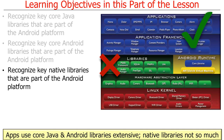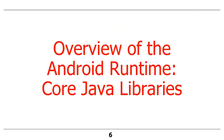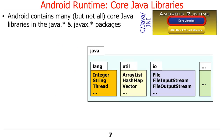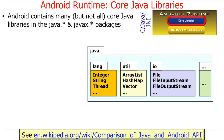Apps use core Java and Android libraries extensively, whereas they don't use the native libraries as much, at least not directly. We'll first present an overview of the core Java libraries that are part of the Android runtime layer. Android contains many, but not all, of the core Java libraries in the Java and JavaX packages. These include various packages such as java.lang, java.util, java.io, java.concurrency, and so on. This link at the bottom of the slide describes the differences between the Java and Android APIs, which have been converging slowly over time.